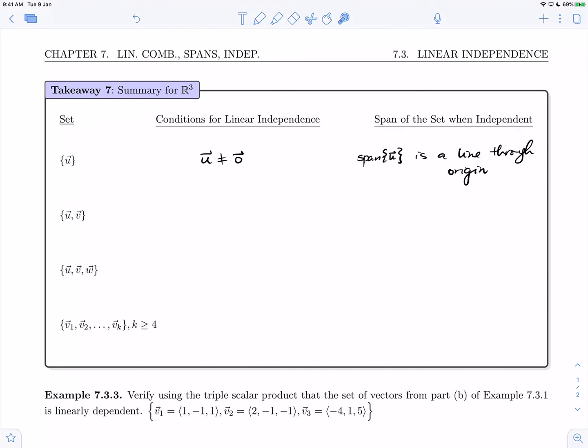If we have a set containing two vectors, that set will be linearly independent if the vectors u and v are non-parallel, in which case the span with u and v as generators will be a plane through the origin.